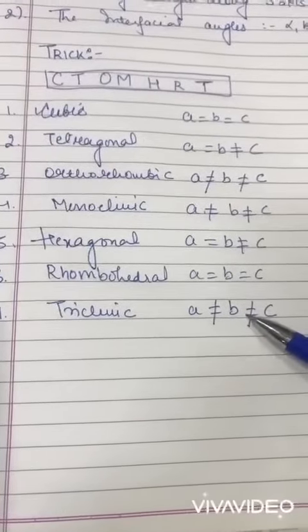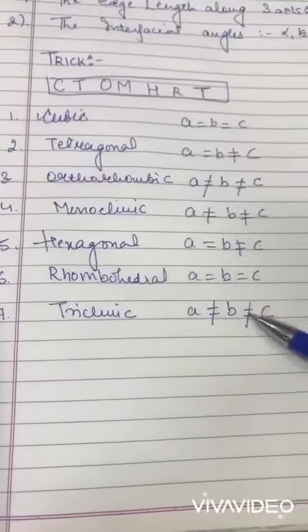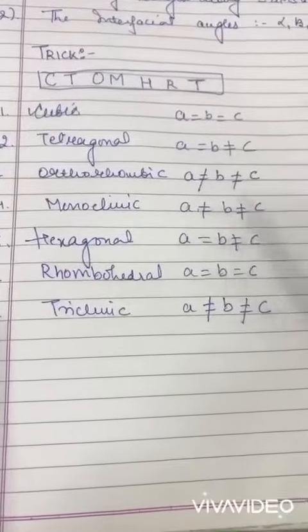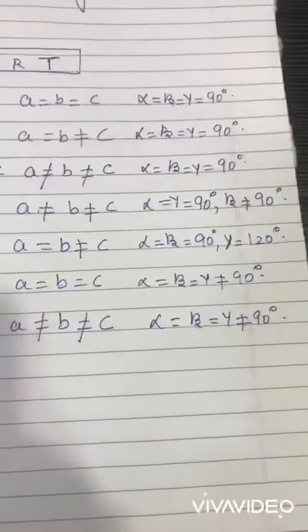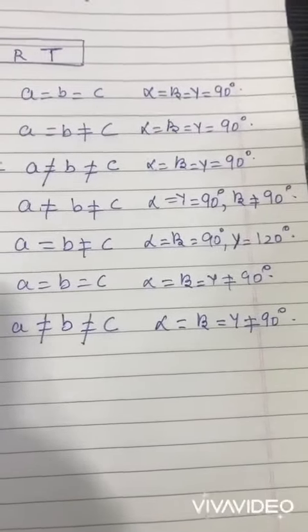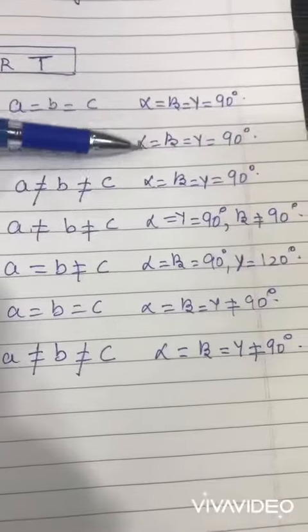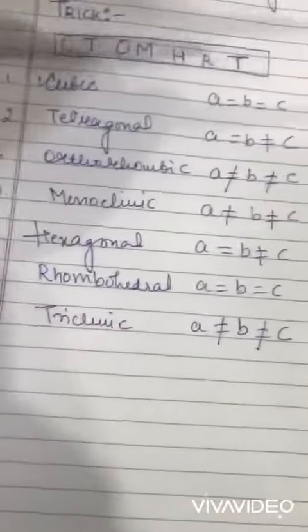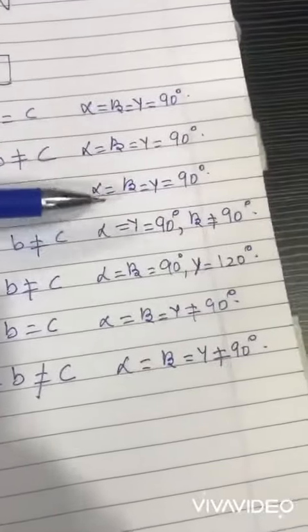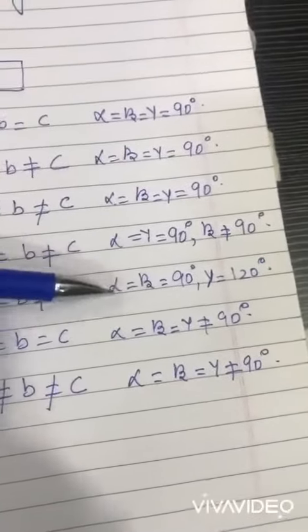Now let's start with the axial angle. In axial angle, you can see the first three are very common, that means alpha equals beta equals gamma equals 90 degrees. But in case of monoclinic, beta is not equal to 90, and in case of hexagonal, gamma equals 120.